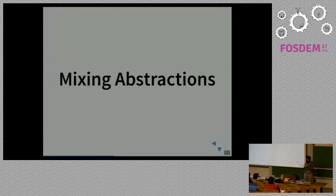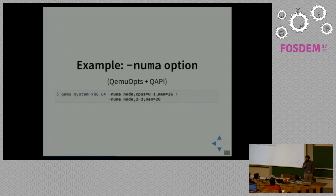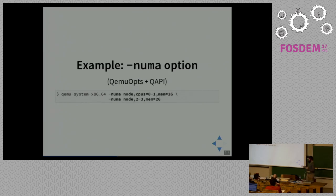Now that we've seen an introduction to each of those abstractions individually, let's see how they work together — that's where things get interesting. The first example is the dash-numa command line option, one case where we mix QMU Ops and QAPI together. Let's see how that works.